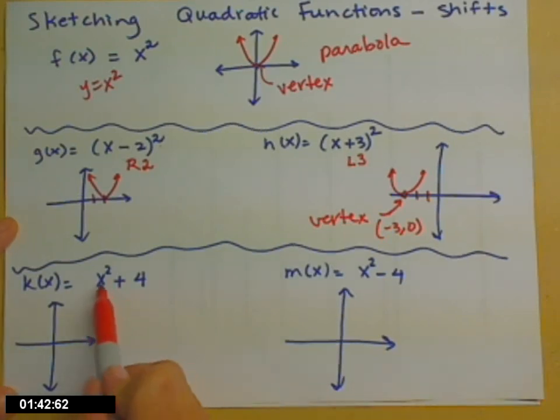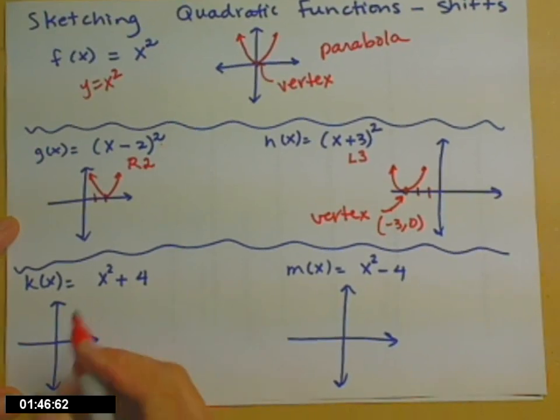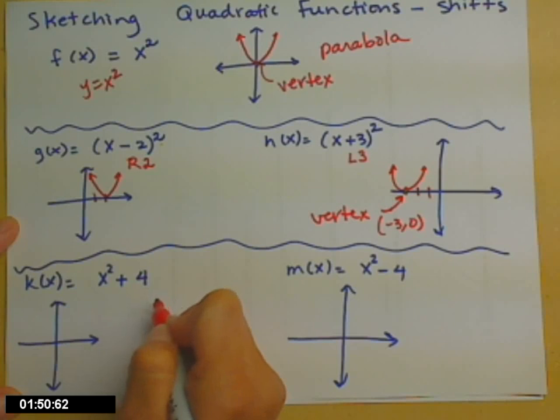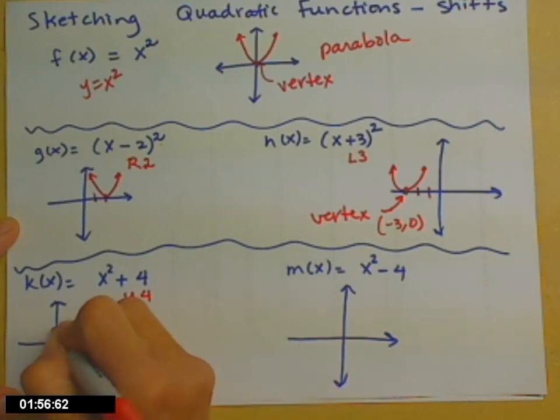For k, this time it's x squared, and then you add 4. So what this does, when the plus 4, or the plus a number, is outside of the squaring, happens after the squaring, we're going to move up 4. So we're going to take, again, that same parabola we started with, and move it up 4 spaces on the y-axis.